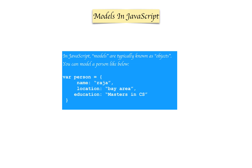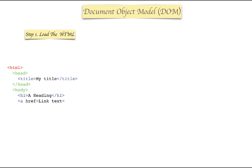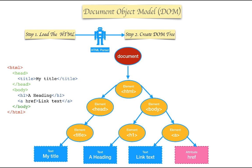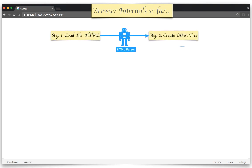Now that we understand what modeling is, how is HTML modeled in the browser? The browser uses a program called the HTML parser. The HTML parser reads the raw HTML and converts it into a tree-like structure called the DOM, or Document Object Model. This is because HTML looks very similar to a tree or family tree structure, with parent elements, child elements, grandchildren, and siblings. By modeling HTML into the DOM, browser authors can build APIs and manipulate the DOM programmatically.